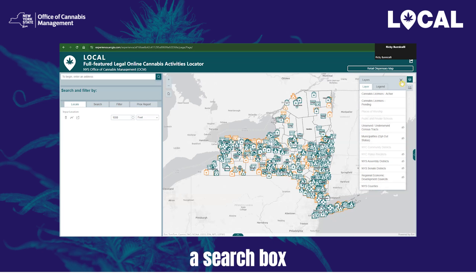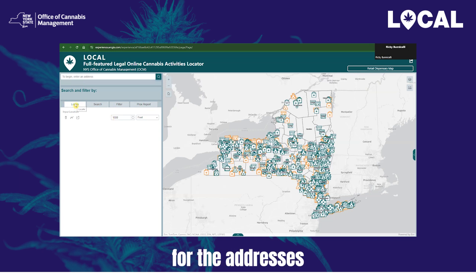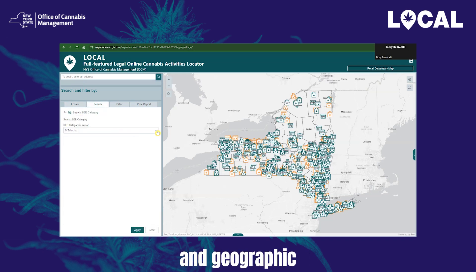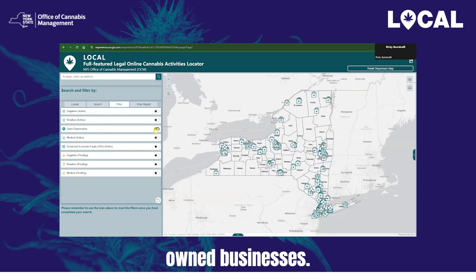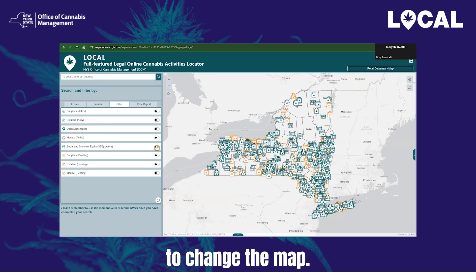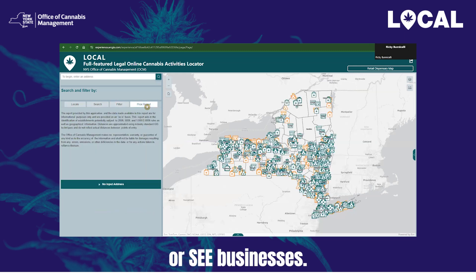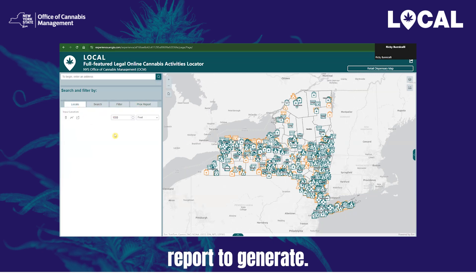On the left-hand side of the application, you will see a search box where you can enter an address. Below that, you will see four tabs: Locate, Search, Filter, and Prox Report. The Locate tab displays a 1,000-foot default buffer for the address searched and includes information on the various layers and relevant data points within that distance buffer. The Search tab allows you to search active and pending layers by various attributes and geographic data points, including licensees belonging to specific categories such as distressed farmers or women-owned businesses. The Filter tab contains eight preset filters to quickly view the map for suppliers, retailers, open retailers, medical dispensaries, or seed businesses. The last tab is the Prox Report, where you can generate a report based on the address you have searched by clicking the green Run Report button.